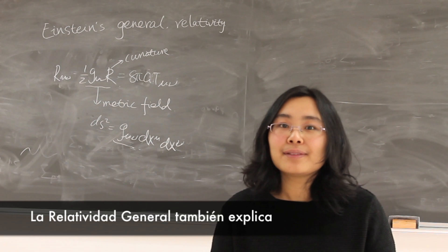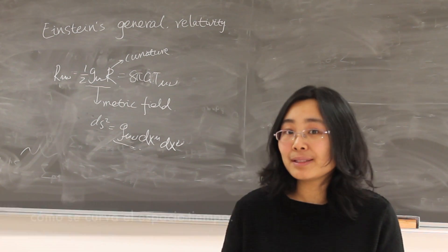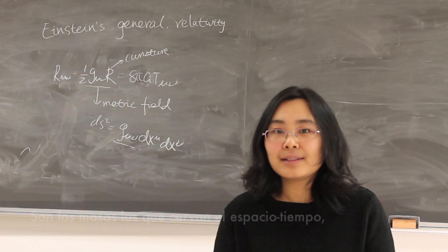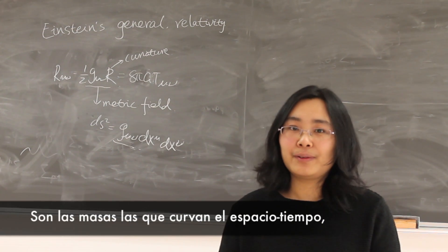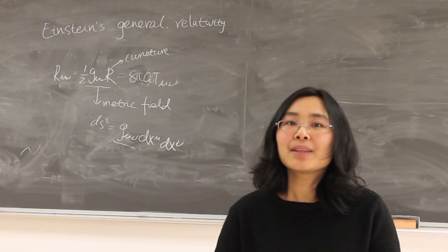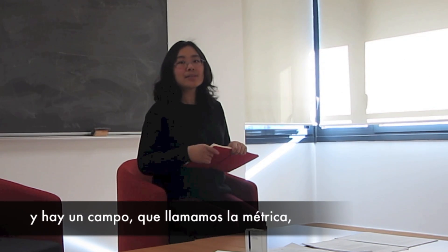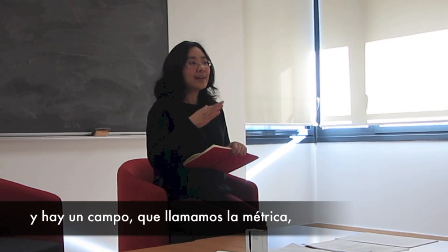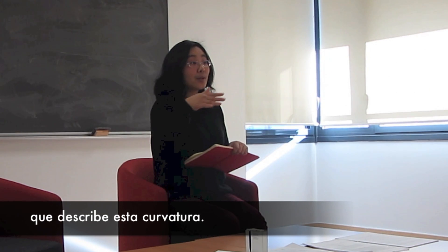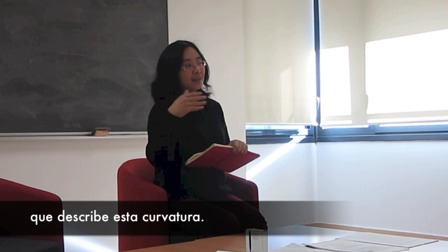General relativity also tells us how the space-time becomes curved. It turns out that the massive objects in our universe curve the space-time, and there is a field, we call it the metric field, that describes how the space-time is curved.